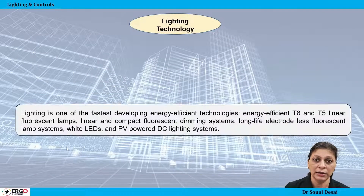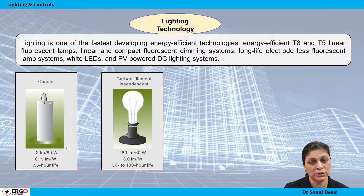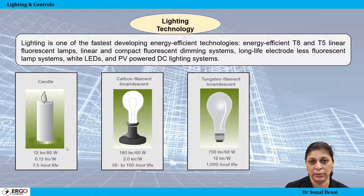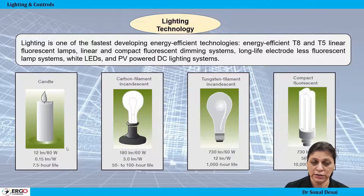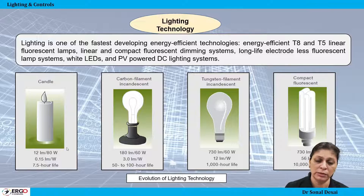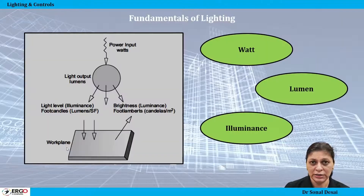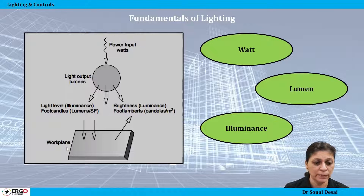Different lighting technologies developed from oldest days to recent times are explained here. Lighting is one of the fastest and largest growing areas where maximum technological development has taken place, covering everything from incandescent bulbs to LED lighting technologies. Efficient lighting design procedures are also explained.